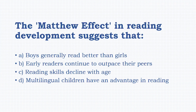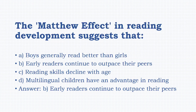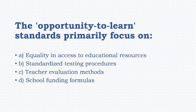The Matthew Effect in reading development suggests: that boys generally read better than girls, that early readers continue to outpace their peers, that reading skills decrease with age, or that multilingual children have advantages in reading. The answer is option B: early readers continue to outpace their peers.